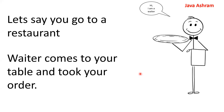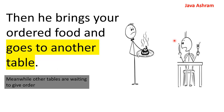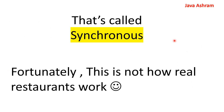Let's say you go to a restaurant and the waiter comes to your table and takes your order. As he goes to the restaurant kitchen, he waits in front of the kitchen till your order is ready. And once the order is ready, he brings your food and goes to another table. At the same time, the other tables are waiting to give their order. That's called synchronous.